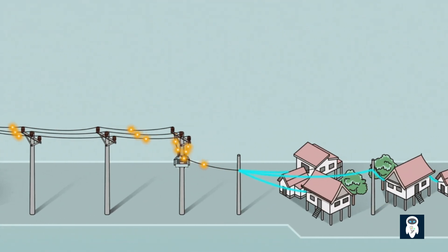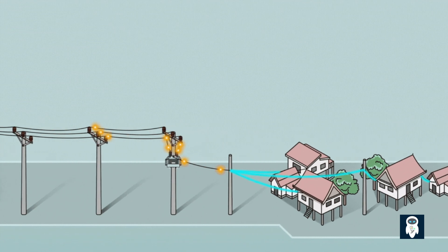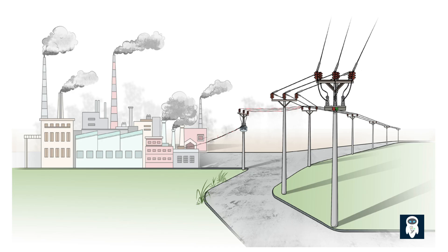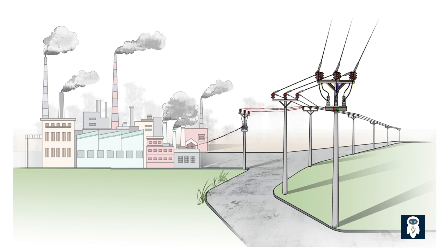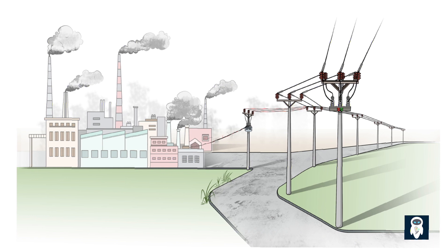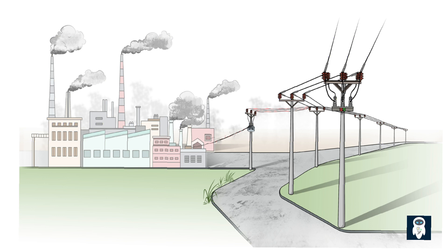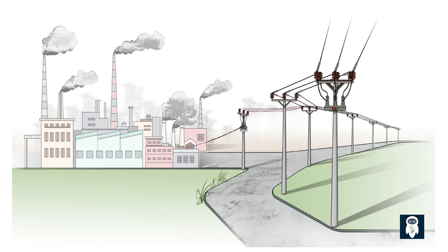Having a single line simplifies the distribution system, making it easier to maintain and repair. In case of an issue, it is simpler to identify and isolate the problem with a single line. It also reduces the risk of accidents and electrical hazards, as lower voltages are less dangerous compared to high voltages. From a cost perspective, installing and maintaining two power lines in every residential area would significantly increase the infrastructure expenses. By utilizing a single line, the cost of distribution systems can be kept relatively lower. This cost-effectiveness allows utility companies to expand the distribution network more easily and provide electricity to a larger number of customers.